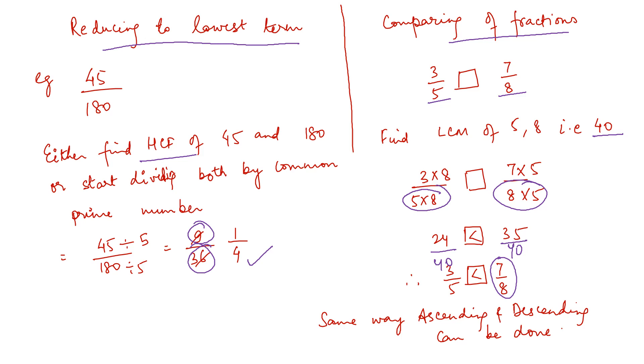Same way you can arrange in ascending and descending order also. First you will make them like and then see the numerators only. After making like, numerators are only important because denominators are anyway same.